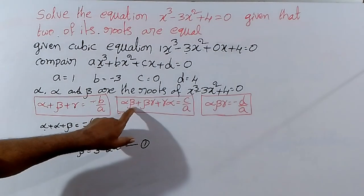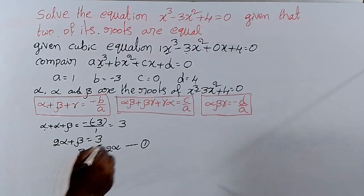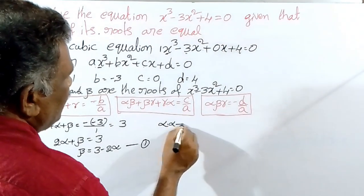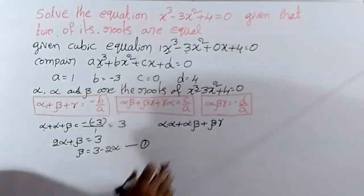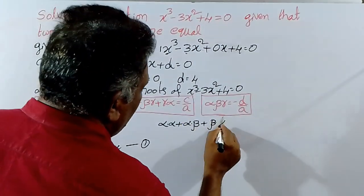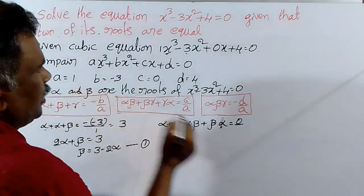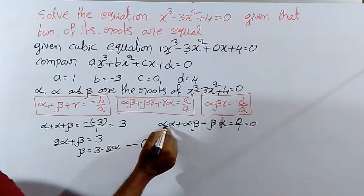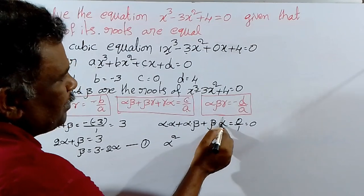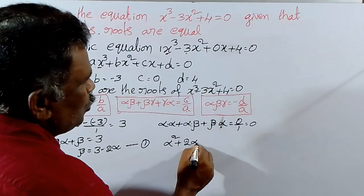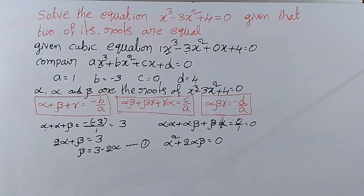Now alpha beta plus beta gamma plus gamma alpha — two roots taken at a time — equals alpha into alpha plus alpha into beta plus beta into alpha, equal to C by A, that is 0 by 1, equal to 0. So alpha square plus 2 alpha beta equal to 0.